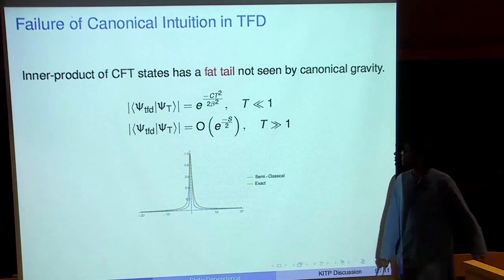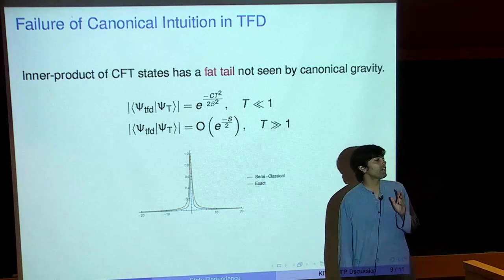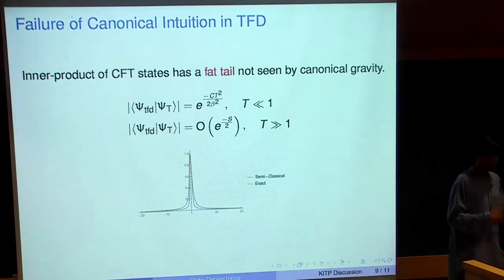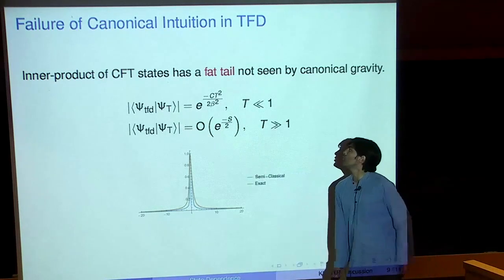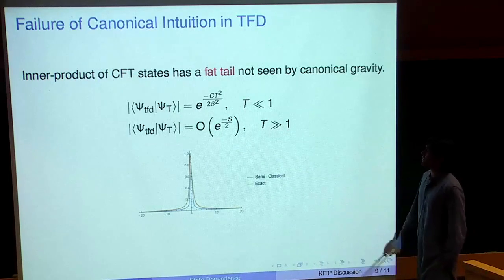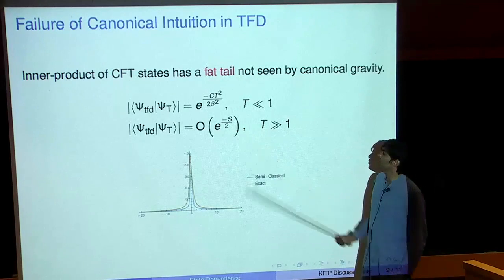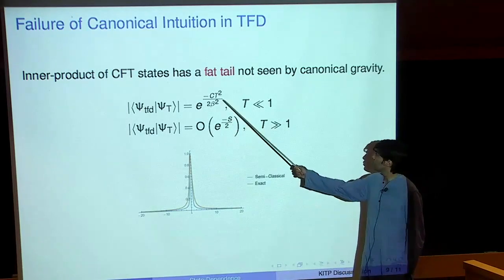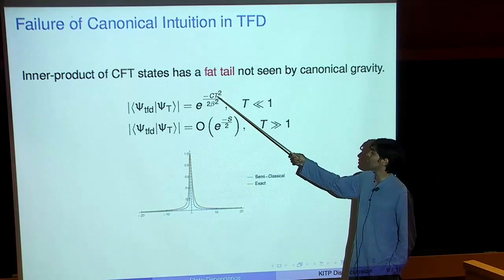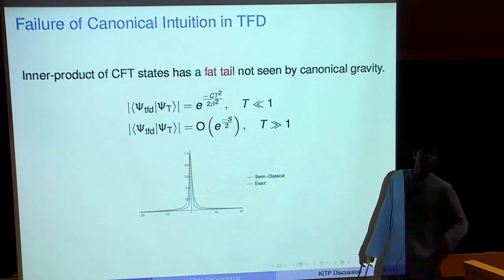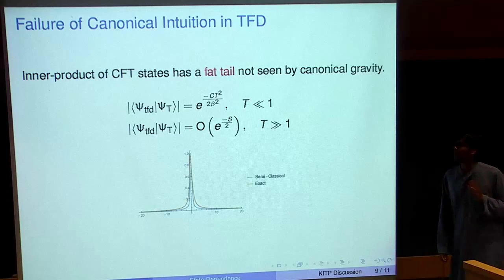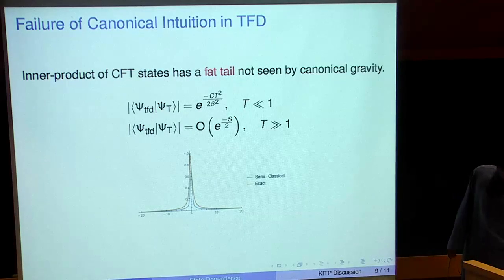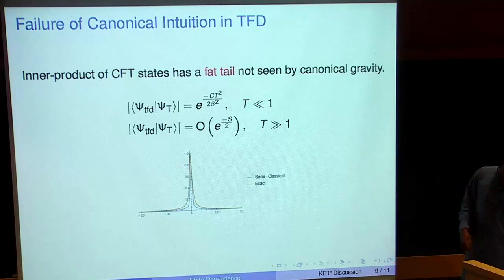You can also understand why the canonical gravity intuition fails in this setup. When you compute the inner product of this one-parameter family of states with the original thermofield double, you find it has a fat tail. For very large t, it behaves as O(e^{-S/2}) — an ergodic behavior not seen by canonical gravity, which sees a falloff going exponentially down forever. This fat tail indicates the breakdown of the canonical gravity intuition. So you have to put these cutoffs.